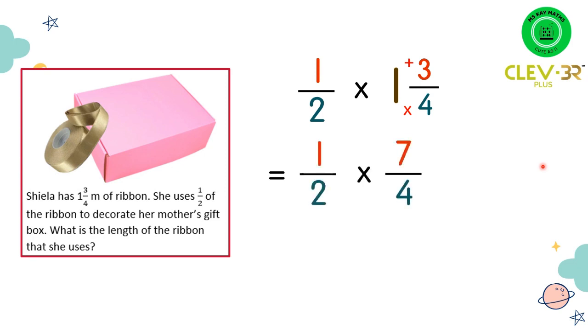Alright, looking at this equation, we cannot use the cancelling of numbers by simplifying the fractions because there's no numbers in the same multiplication table. So what we need to do is to multiply the numerators 1 and 7 and then we multiply the denominators 2 and 4.